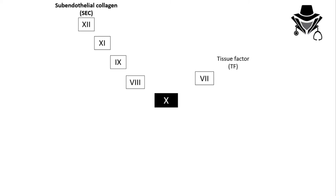Factor number 10 is the perfect 10. On the other hand, in the extrinsic pathway, tissue factor activates factor 7, and factor 7 activates factor 10. Now both the extrinsic and intrinsic pathways have scored the perfect 10 — factor 10 is activated — and from there we start the journey of the common pathway.